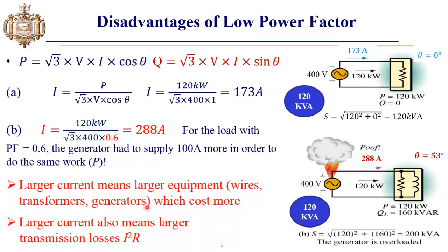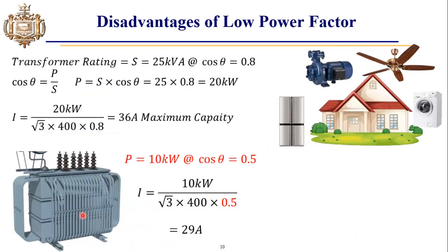The disadvantage of low power factor is that you will require larger equipment, which includes wires, transformers, and generators to feed the same load but with low power factor. And also since the load has low power factor, it will draw more current and there will be more transmission losses, as the transmission loss is equal to I²R.